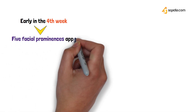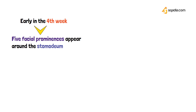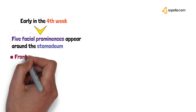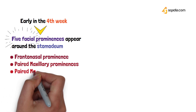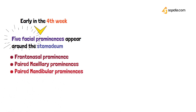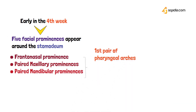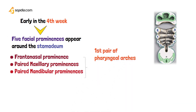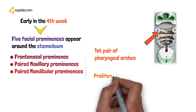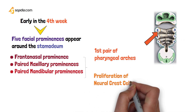Earlier in the fourth week of intrauterine life, five facial prominences appear around the stomodium, meaning the future mouth site. These prominences are the frontonasal prominence, the paired maxillary prominences, and the paired mandibular prominences. The maxillary and mandibular prominences are basically derivatives of the first pharyngeal arches.